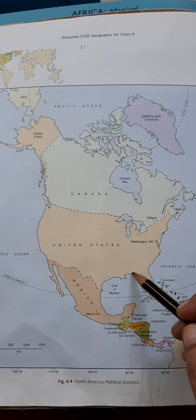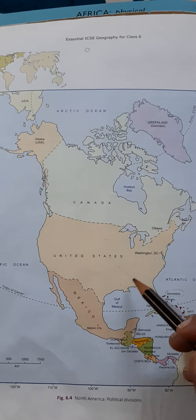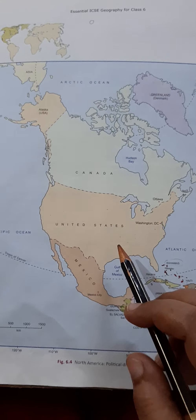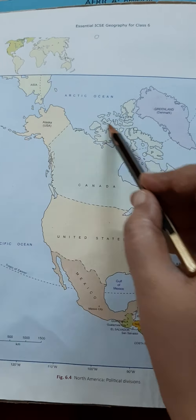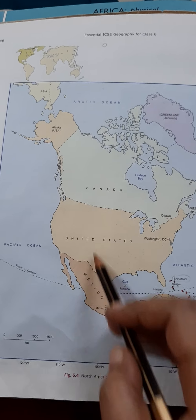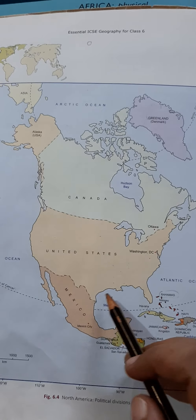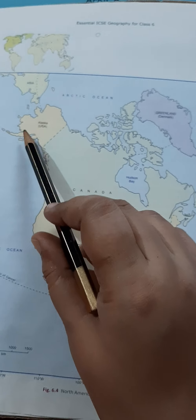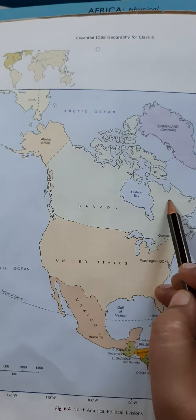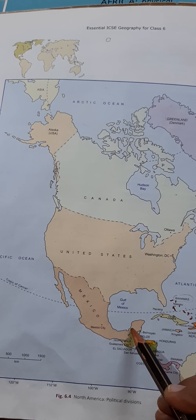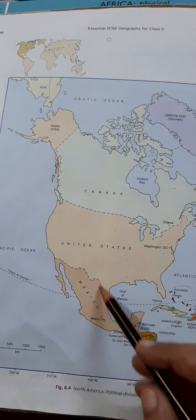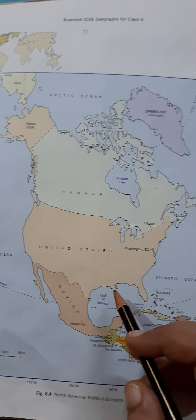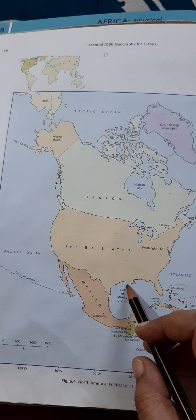The continent is roughly triangular in shape, with a broad base in the temperate zone and narrow tapering end in the tropical zone. It is wider in the north and tapers toward the south. It is not an exact triangle but roughly triangular — broad across the northern temperate region and narrowing as you move down to the southern tropical zone.